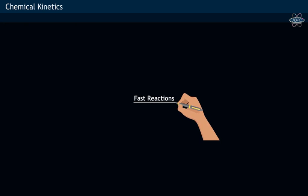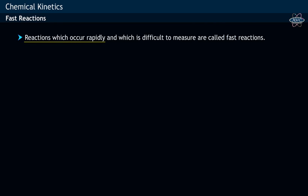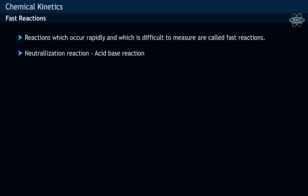Fast reactions: the reactions which occur rapidly or instantaneously, and it is difficult to measure their speed, are said to be fast reactions. Neutralization reactions between acids and bases are fast reactions.